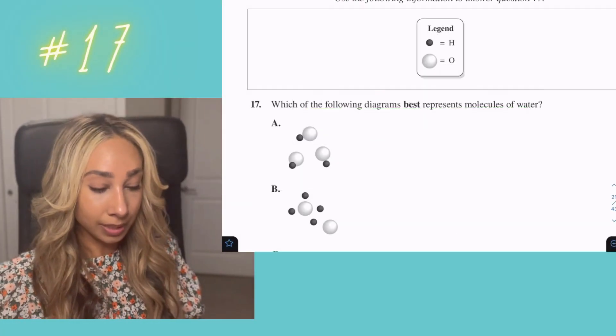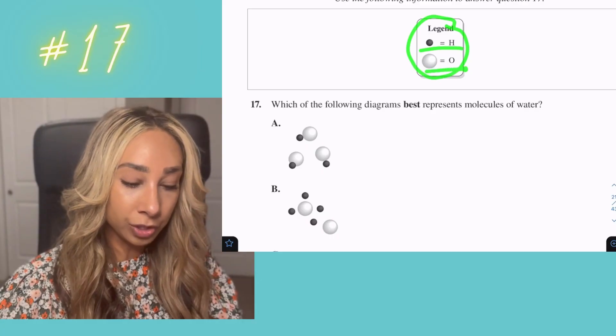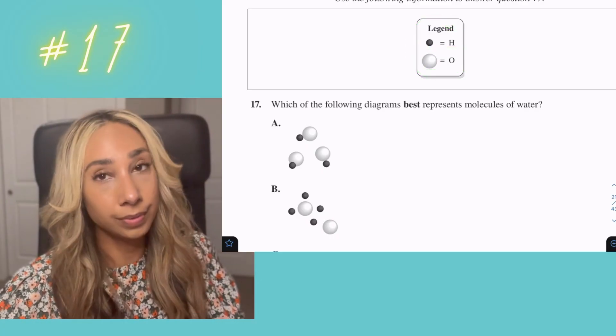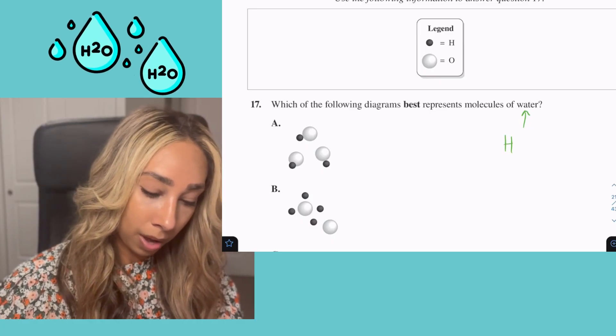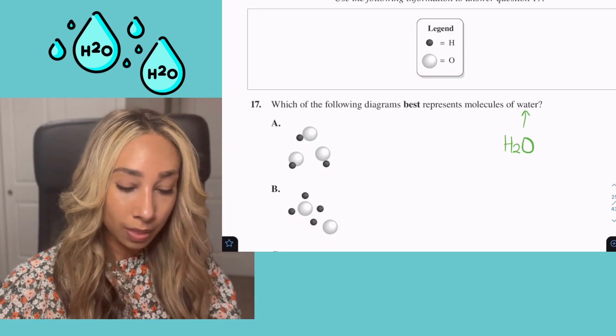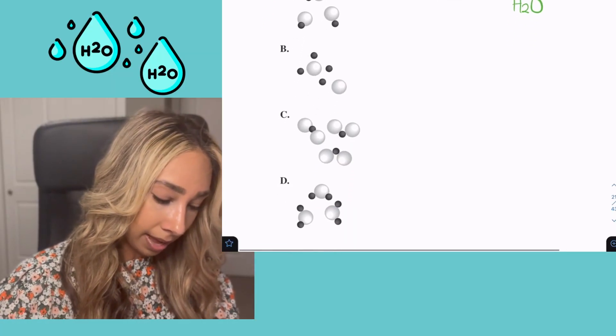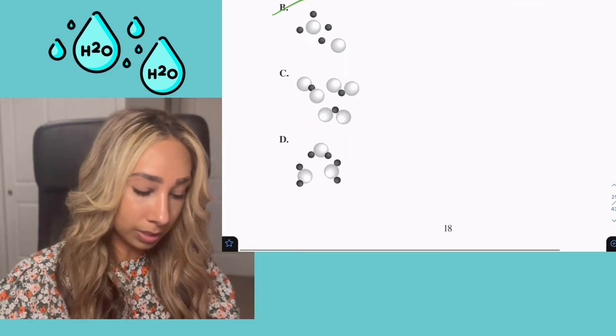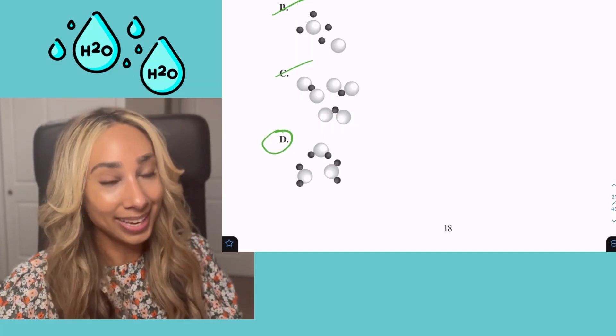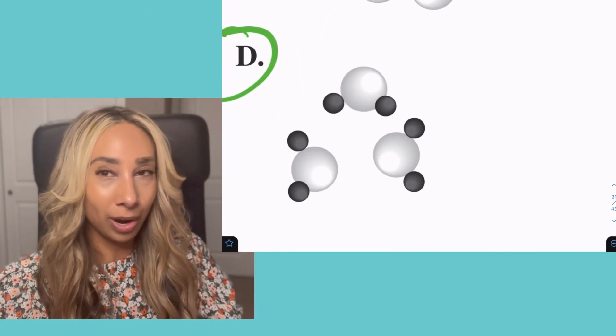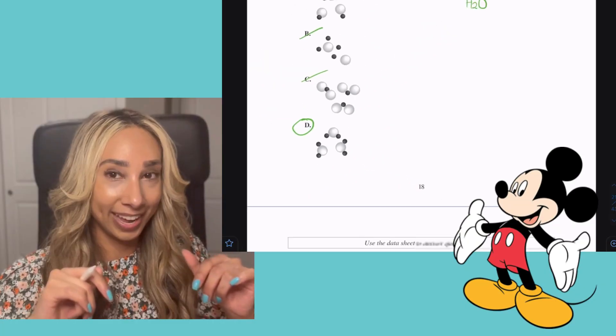Number 17. They've given us our key, what hydrogen is and what oxygen is. That's pretty accurate. Hydrogen is relatively small in comparison to oxygen. They want to know what's going to represent water. The molecular formula for water is H2O. That means we need two hydrogens. We need two of those little h's and that one does not have it. These ones aren't even touching, so that wouldn't even be a compound. This one only has one. So the only option I really have is D. The other thing is water kind of looks like Mickey Mouse. If you ever are stuck on that one, it kind of looks like Mickey Mouse there with the ears in the head.